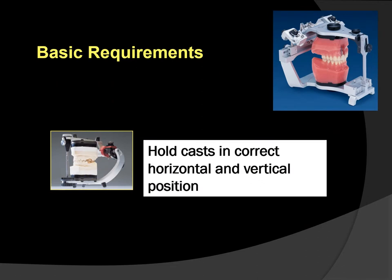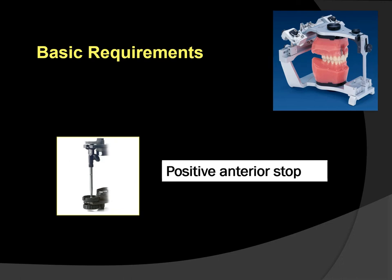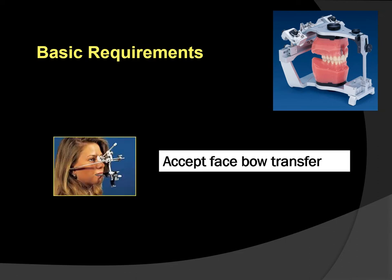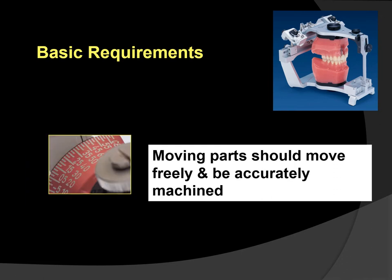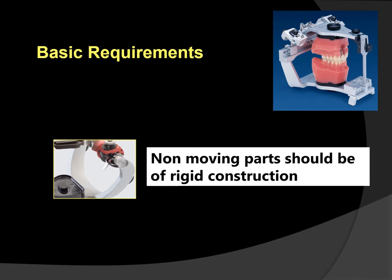Let us see the basic requirements of an articulator. The first minimal requirement is to hold the cast in the correct horizontal as well as vertical position. It should have a positive anterior stop — that is, an anterior vertical stop or an incisal pin. It should accept a face-bow transfer record using an anterior reference point, and it should open and close in hinge movement. It should allow protrusive as well as lateral motion. Moving parts should move freely and be accurately machined, non-moving parts should be of rigid construction, and it should be made of non-corrosive and rigid material that resists wear and tear.